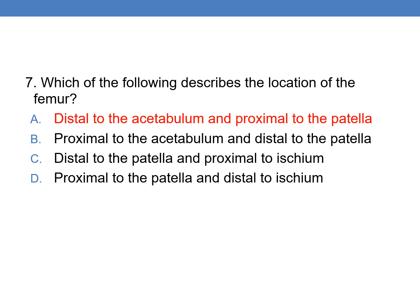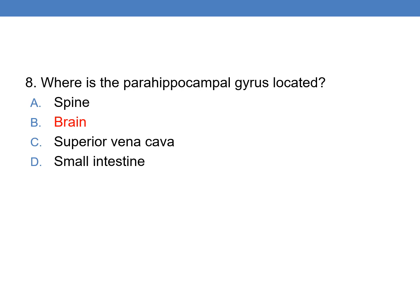Where is the parahippocampal gyrus located? The parahippocampal gyrus is located in the brain. Option B is the right answer.